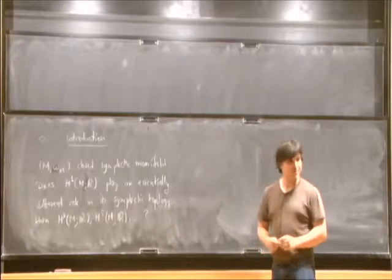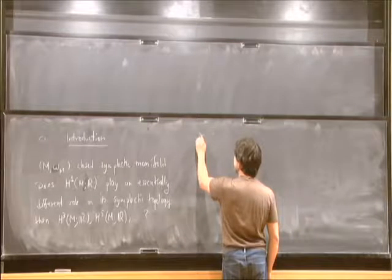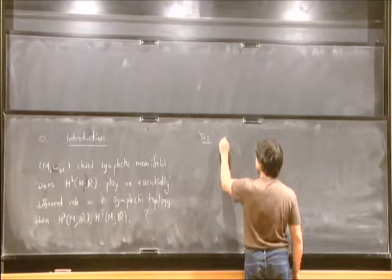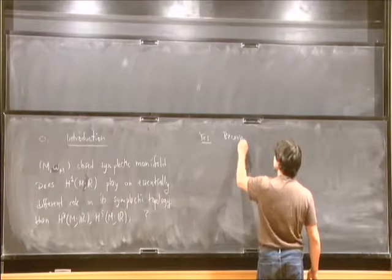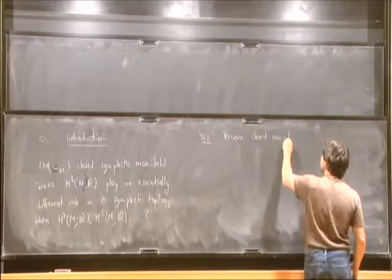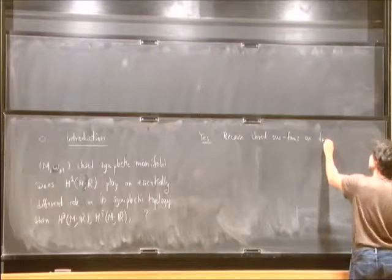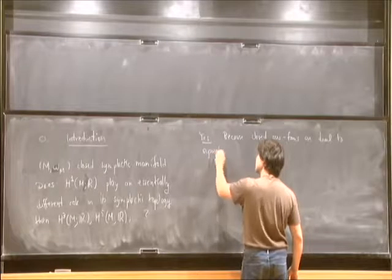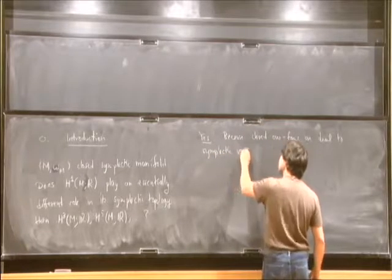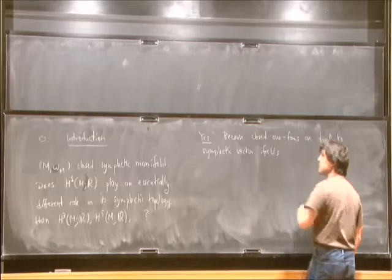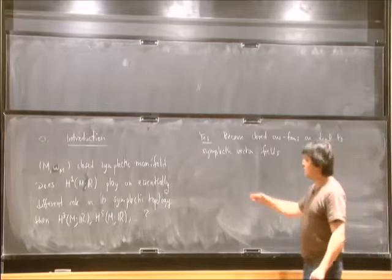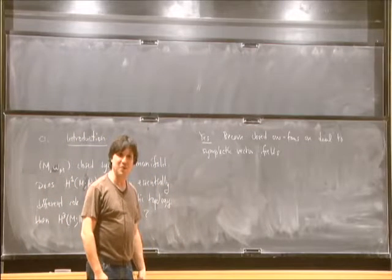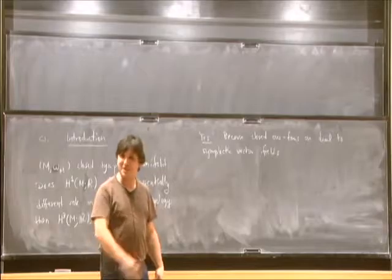The obvious answer would be: of course it plays an entirely different role, because closed one-forms are dual to symplectic vector fields. In particular, closed one-forms up to exact ones are dual to symplectic vector fields modulo Hamiltonian ones, and a lot of the fundamental dynamics comes from just looking at this.